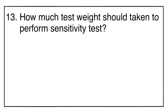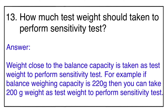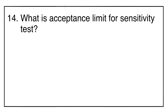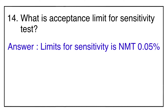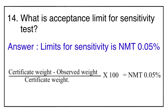Question number thirteen: how much test weight should be taken to perform the sensitivity test? A weight close to the balance capacity is taken. For example, if the balance capacity is 220 grams, you can take a 200-gram weight. Question number fourteen: the acceptance limit for the sensitivity test is not more than 0.05%. The formula is: (certificate weight − observed weight) / certificate weight × 100, and the observed value should not exceed 0.05%.